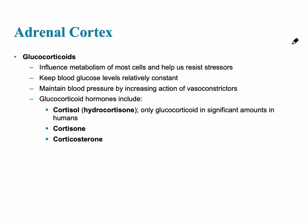The second layer of the adrenal cortex is the zona fasciculata and it produces glucocorticoids. One of the main functions of glucocorticoids is to keep blood glucose levels constant and to deal with long-term stressors. Examples of glucocorticoids include cortisol, hydrocortisone, as well as corticosterone.